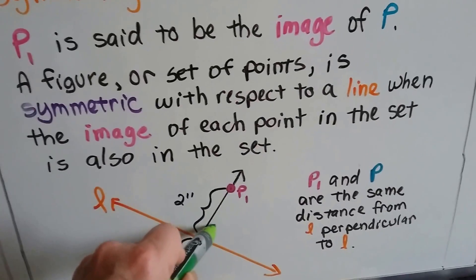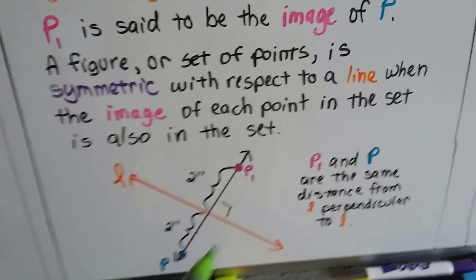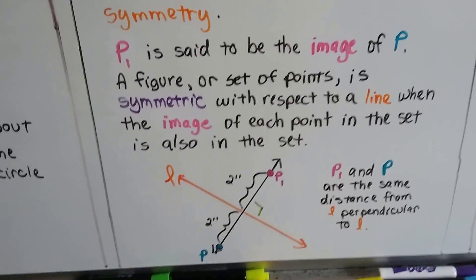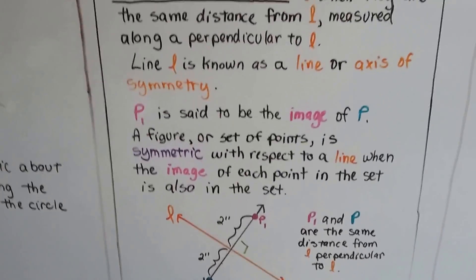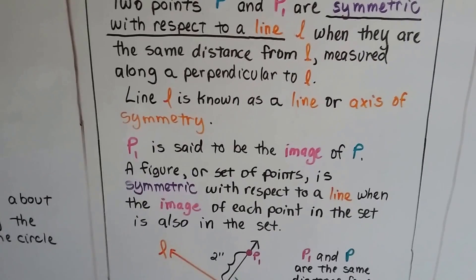Because this would make a right angle here, wouldn't it? Right there. Well, we have 4 right angles, don't we? And line L is known as a line or axis of symmetry.